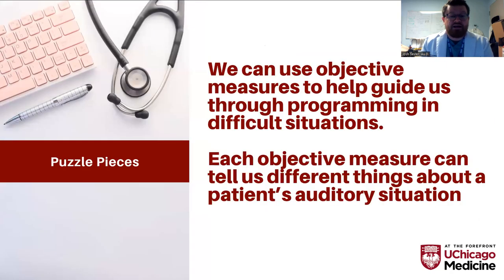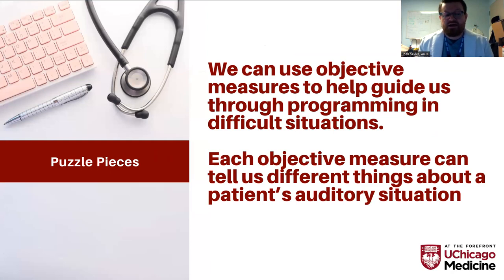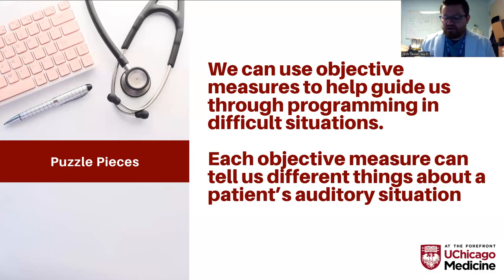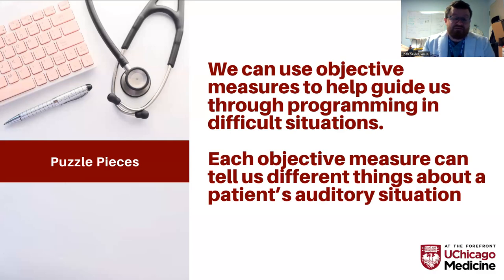These measures can help guide us through difficult situations with complex cases. Each individual objective measure tells us a little bit about the auditory situation for that patient in different ways, so we refer to them as puzzle pieces — kind of like a cross-check measure. When you think about audiology in general, using OAEs, audiometry, and acoustic reflexes, they're all cross-check measures to put all the puzzle pieces together. We take those same principles into cochlear implants.